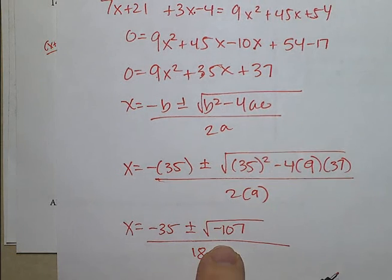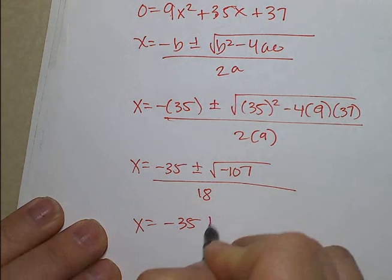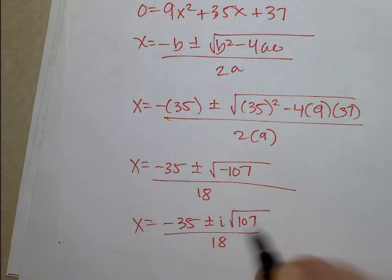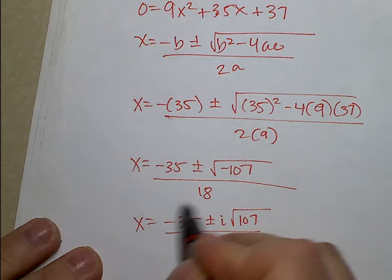Negative 107. We can't have a negative, so we're going to pull that negative out. And it becomes an i. And 107 cannot be broken down using a perfect square, which means this is our final answer.